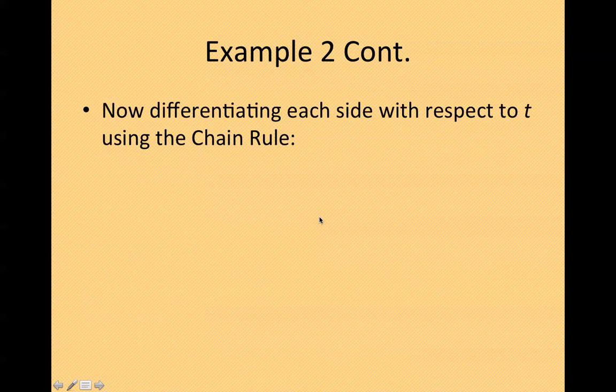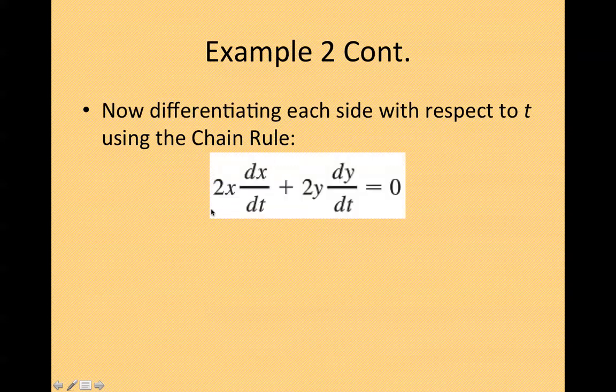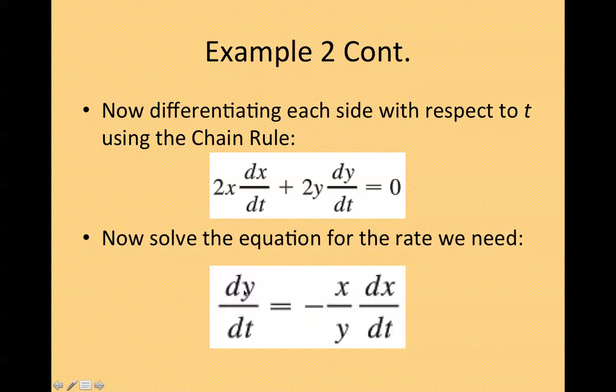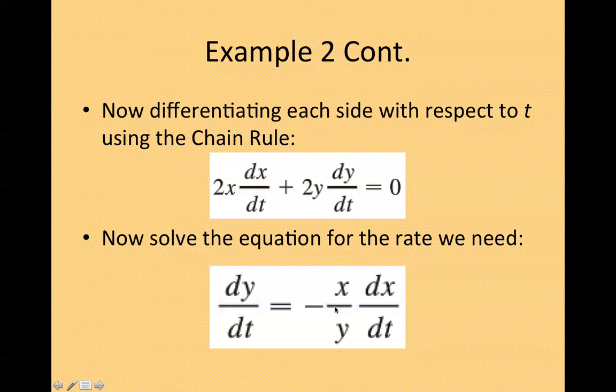Now, differentiate each side with respect to t using the chain rule. So we get 2x dx/dt + 2y dy/dt = 0. Now, solve the equation for the rate we need. dy/dt equals negative x divided by y dx/dt.